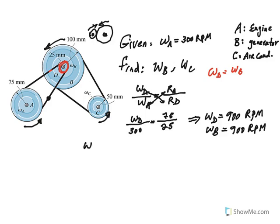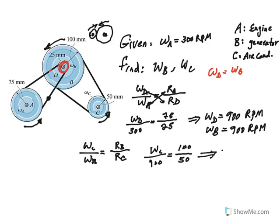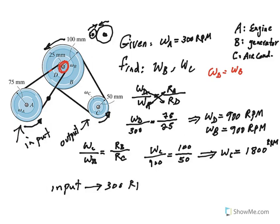To find omega C, use the ratio: omega C / omega B = R_B / R_C. Omega B is 900 RPM, R_B is 100 mm, and R_C is 50 mm. So you're doubling the speed, giving omega C = 1800 RPM. Effectively, this pulley arrangement takes an input of 300 RPM and produces an output of 1800 RPM at the air conditioner pulley — six times the input.